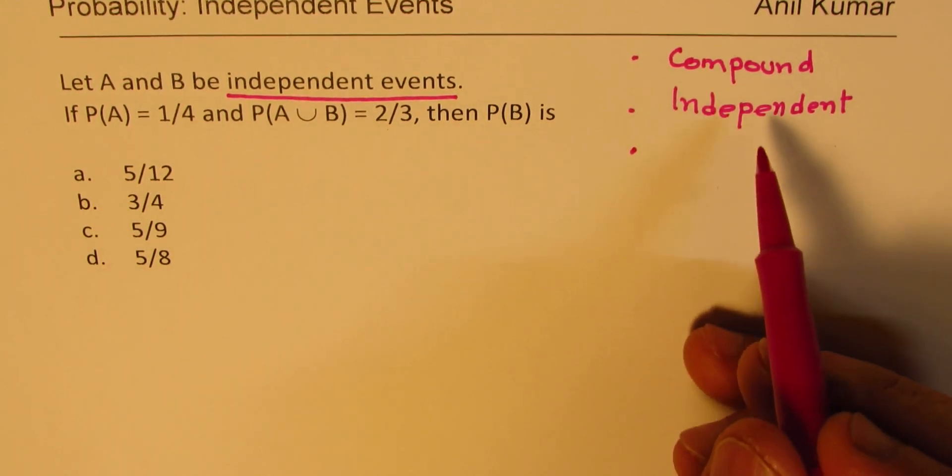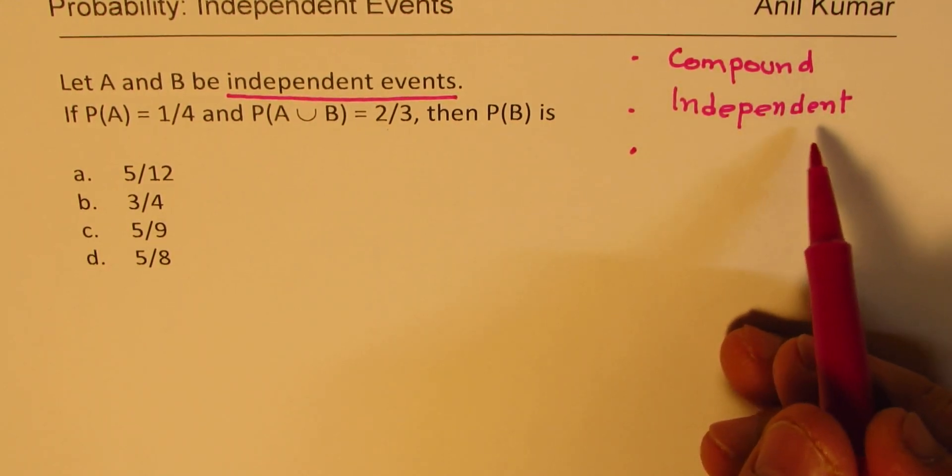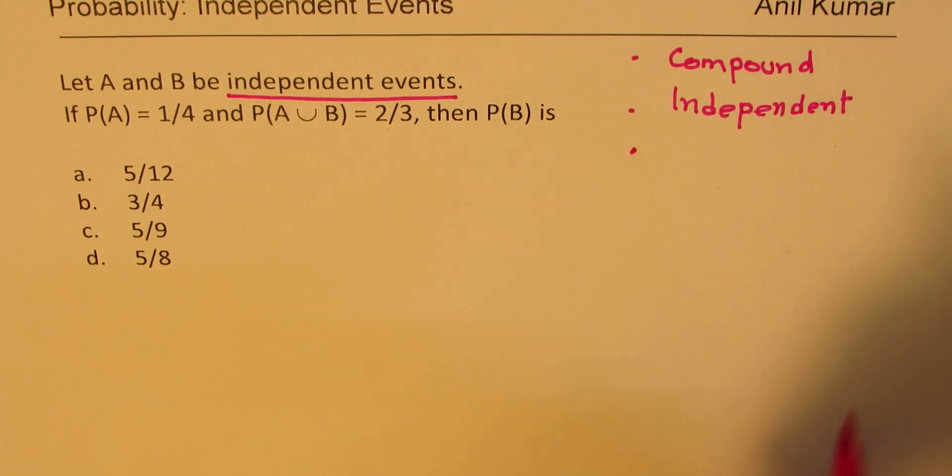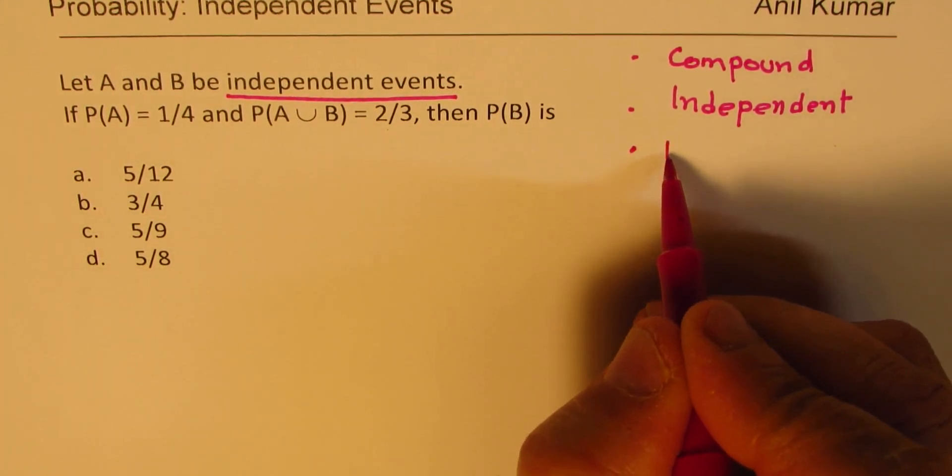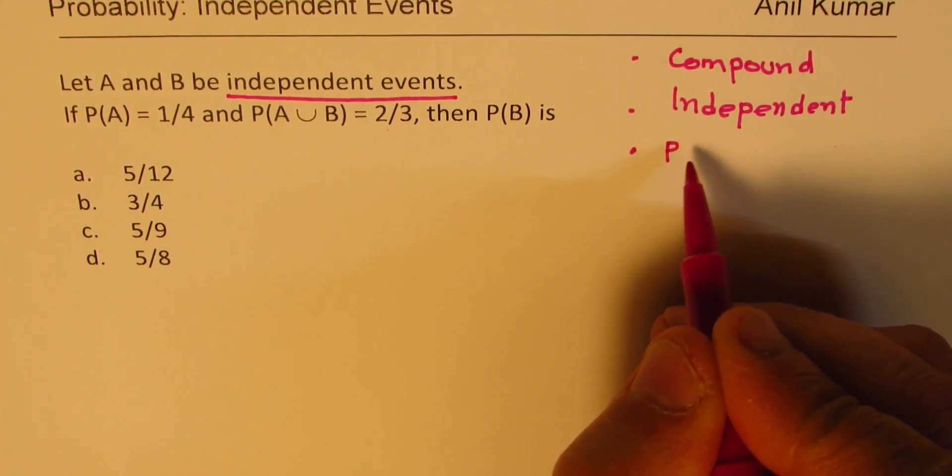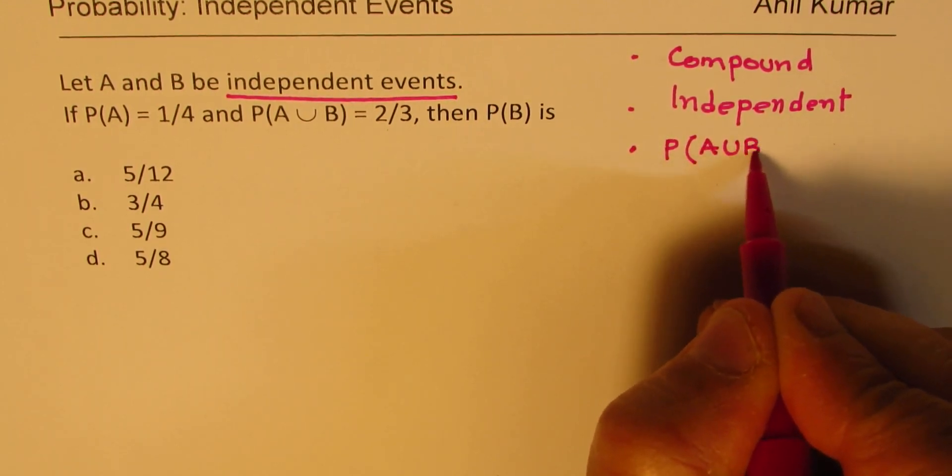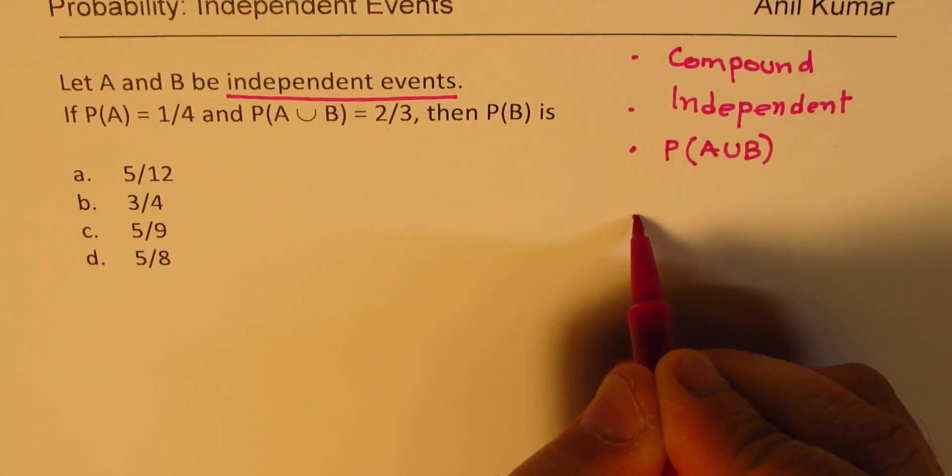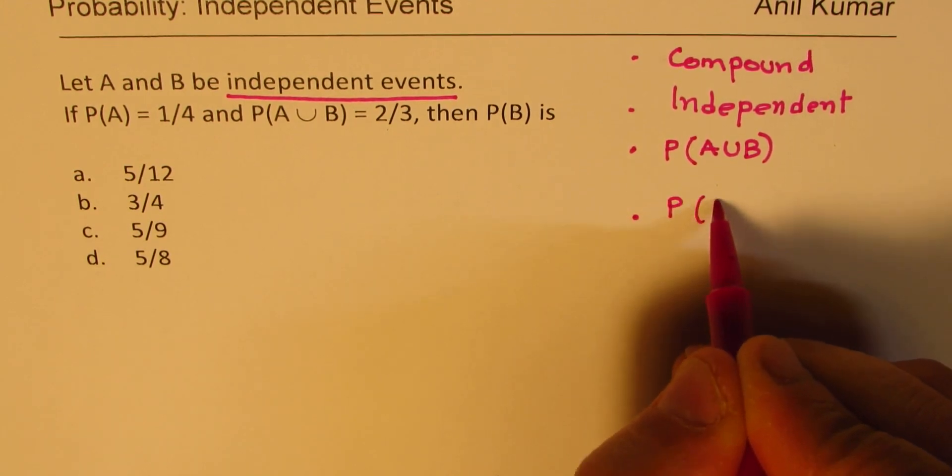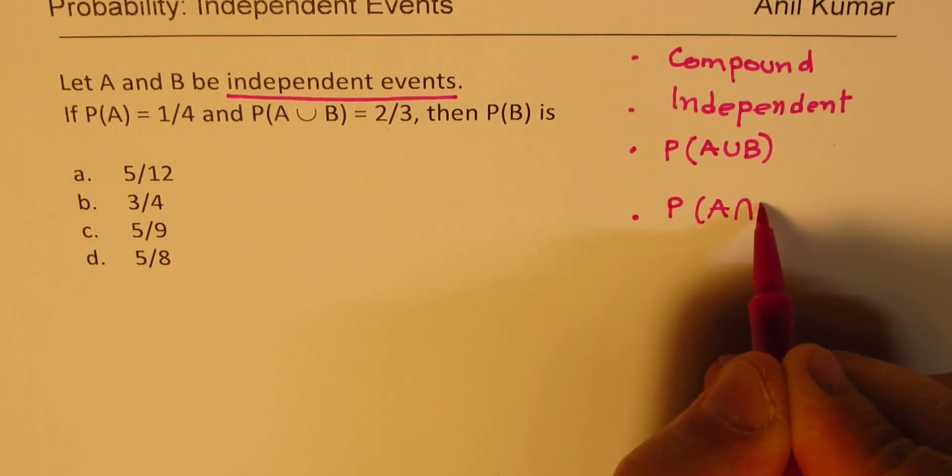If there are two events which are compound and which are independent, as given in the situation, then what is going to be the probability of A union B? This is what you need to figure out. And what is going to be the probability for A intersection B?